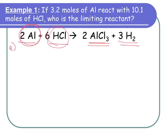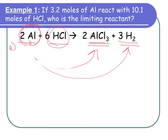Just because you have 12 eggs doesn't mean you have plenty, because if your recipe calls for six eggs you can only make it twice. I've got to figure out who I'm trying to make — aluminum chloride or hydrogen. Since Part B mentions hydrogen, that's where we're headed. Because you have two pieces of given information, label 3.2 moles under aluminum and 10.1 moles under hydrochloric acid. We're going to do two train tracks.